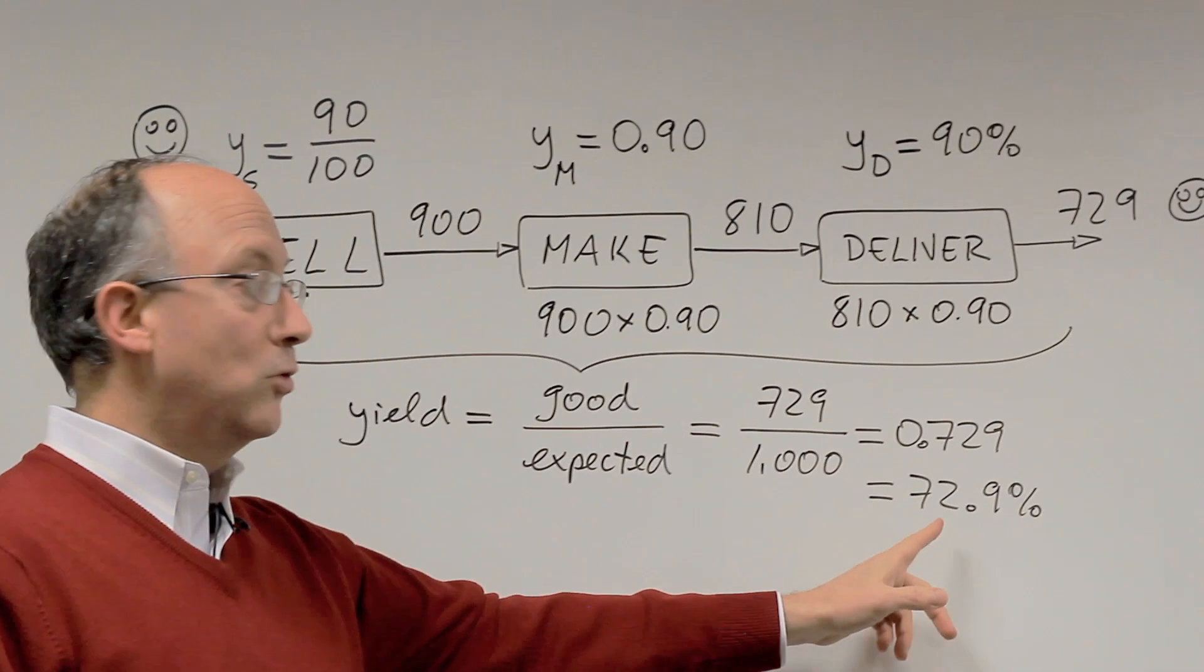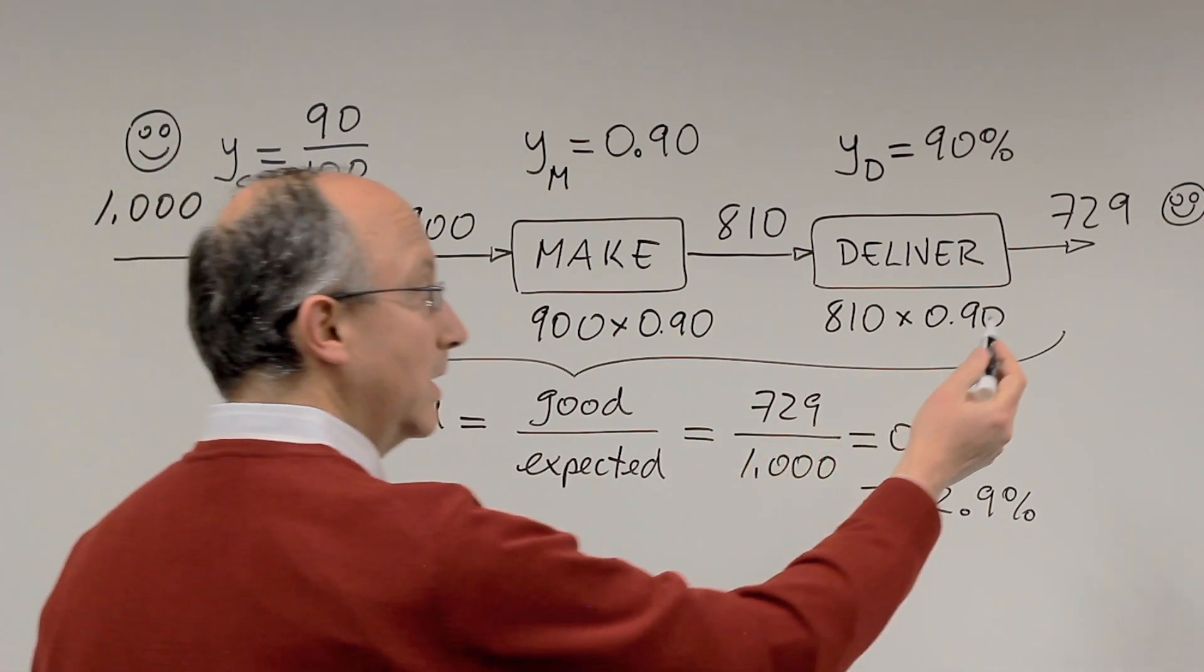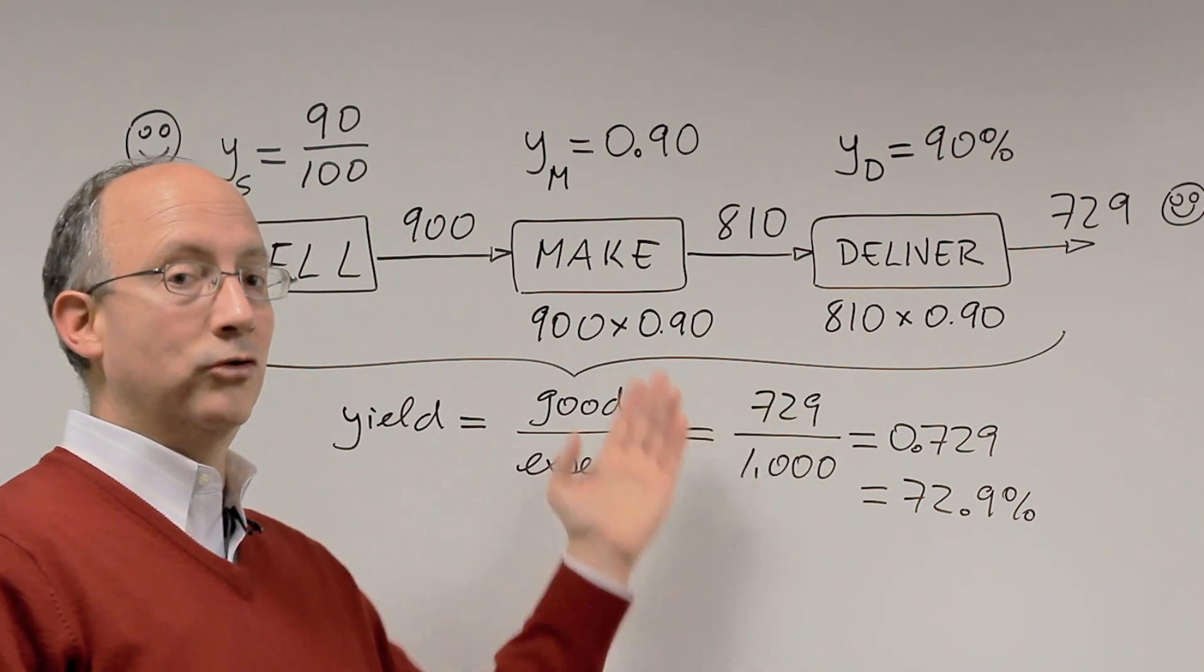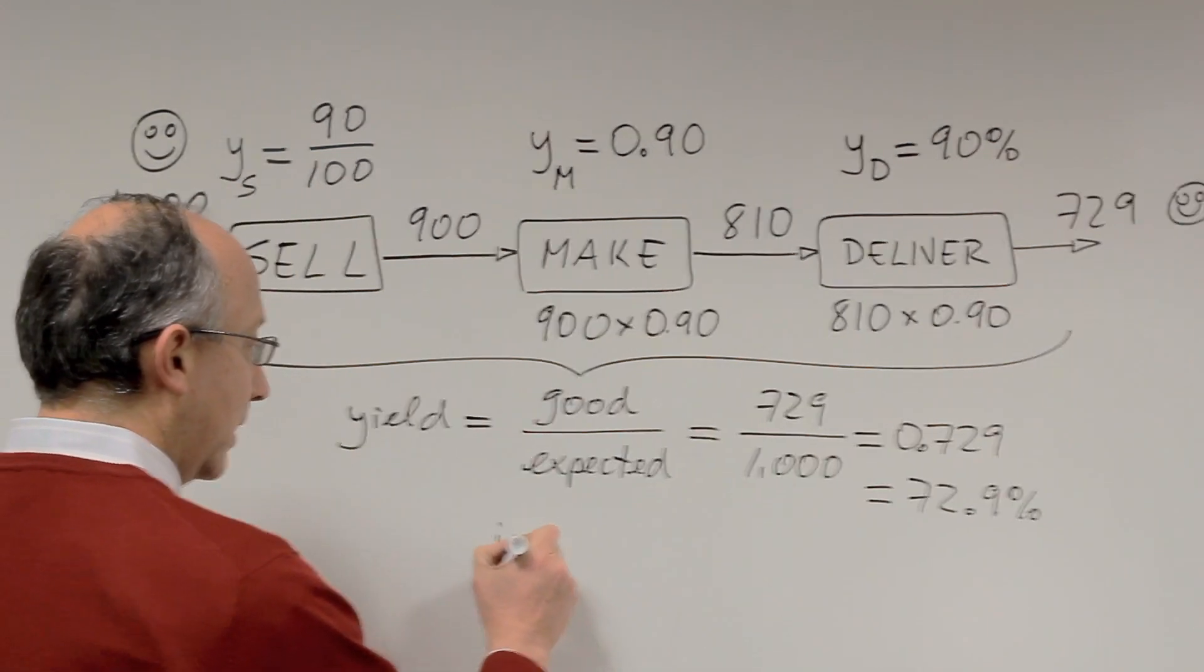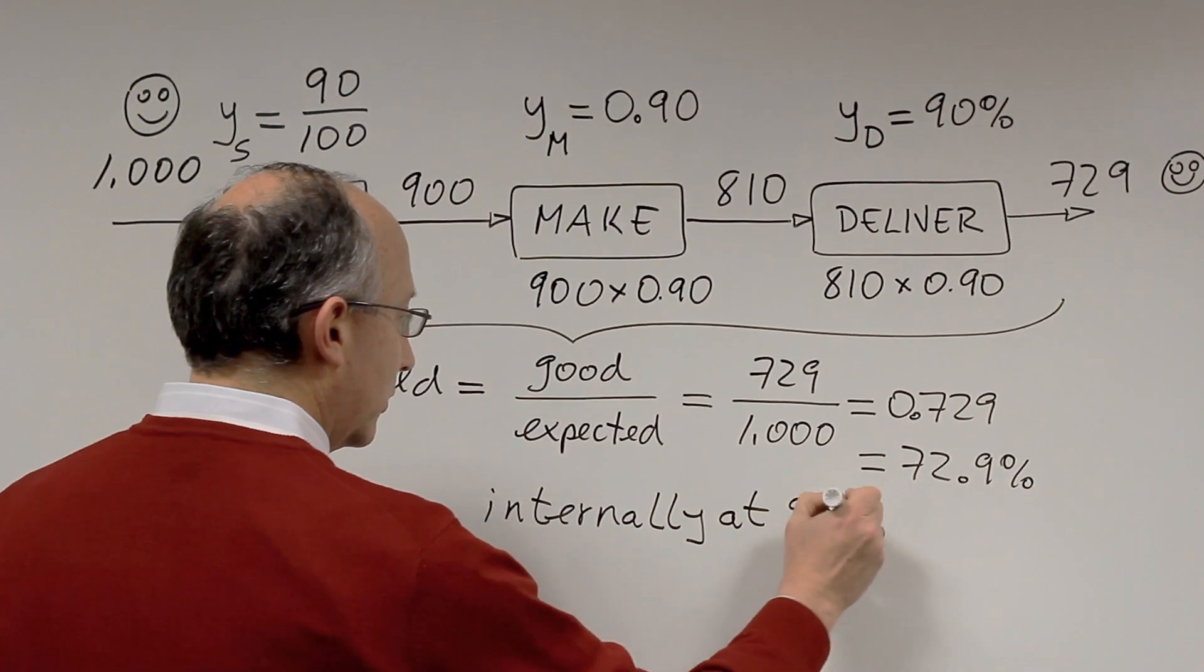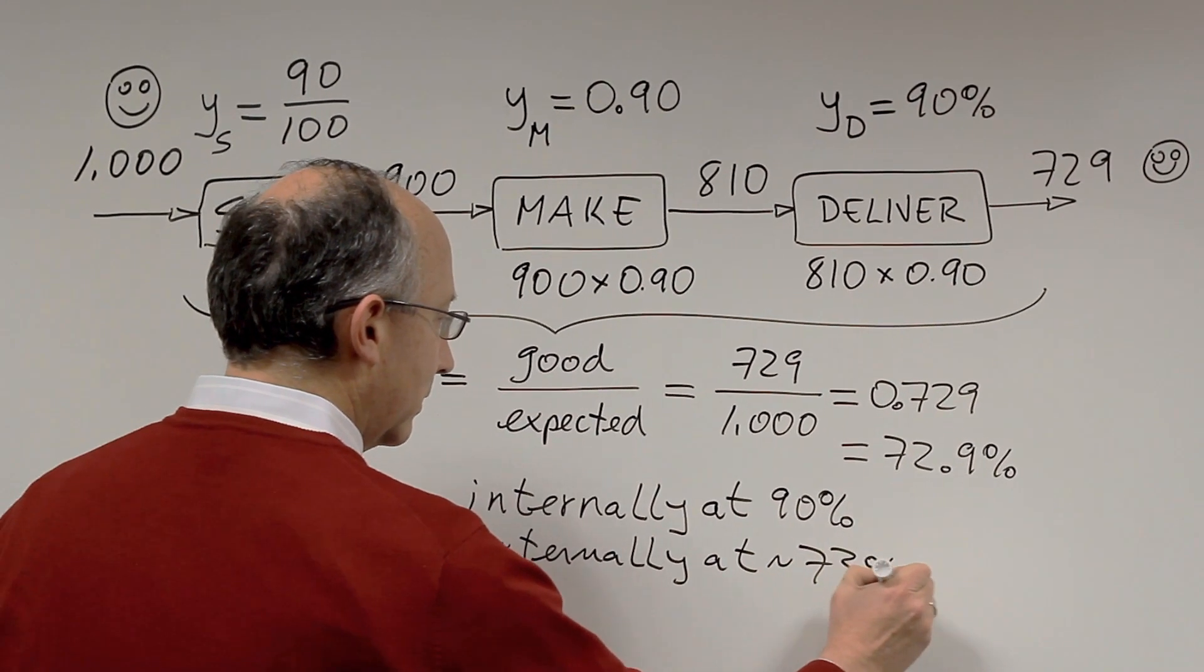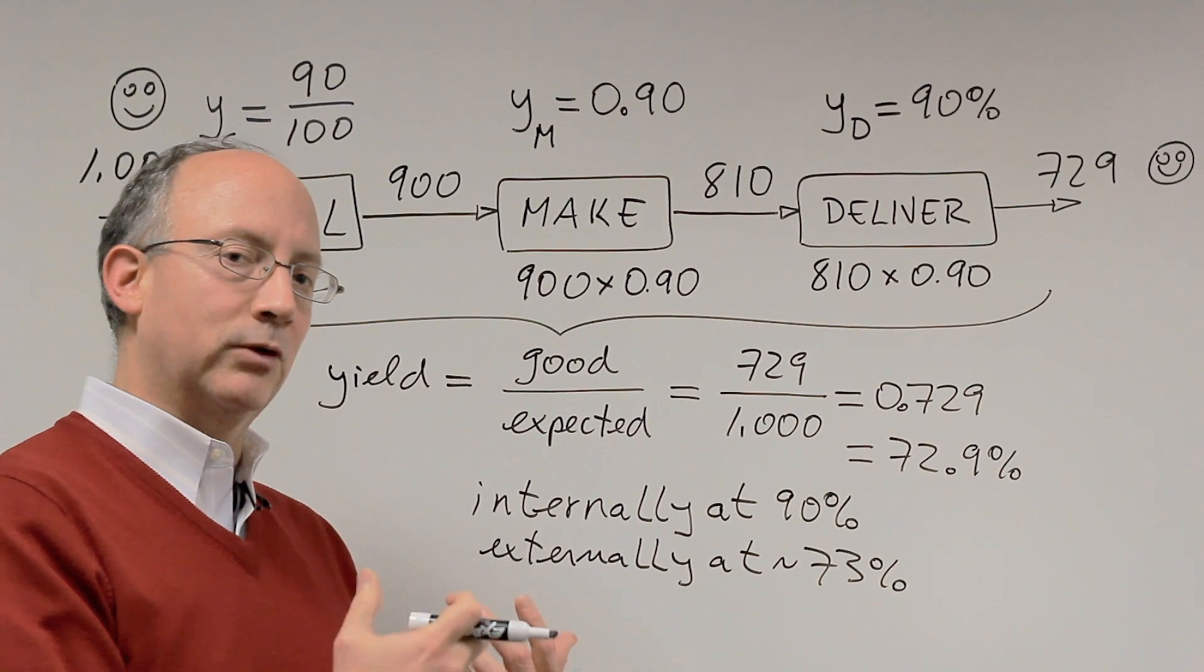Now, this is the kicker. Who believes that the performance is about 73%? The customer. Because these are the 729 which actually got a smooth service without any bumps along the road, without any rework, without any surprises. And they are the ones who would judge your operation as one being at 73%. So there's a contrast between the internal view. Internally, we may think that we are actually operating at 90%, but externally, we actually are operating at about 73%. And so this is a tremendous clash, or conflict of perceptions as to really what is happening.